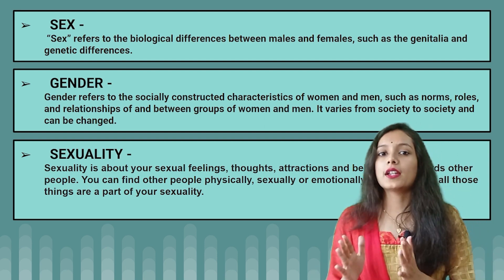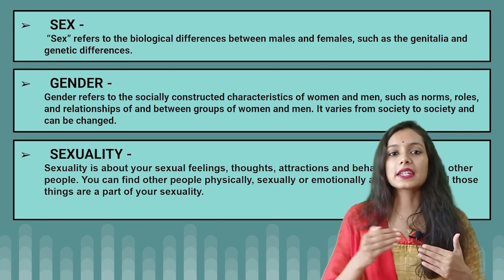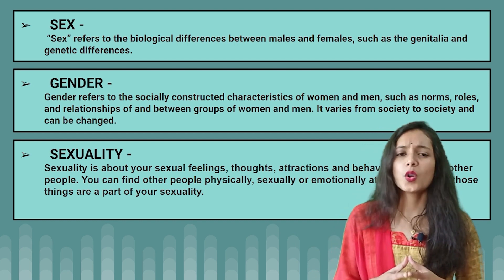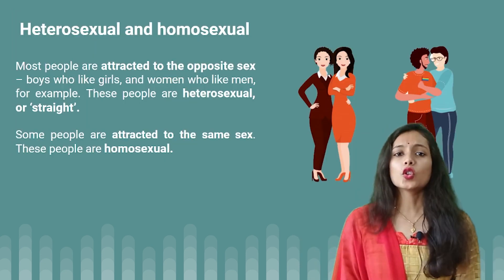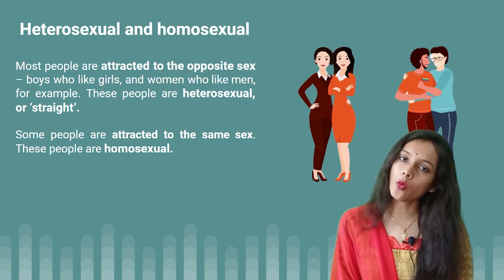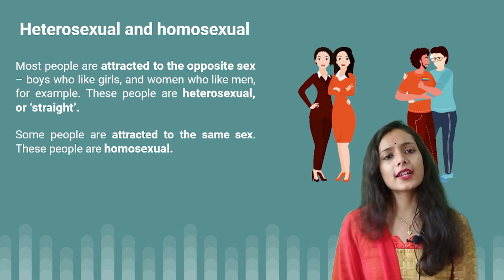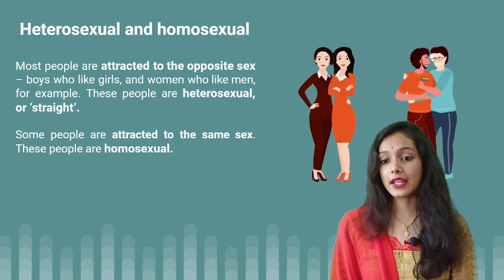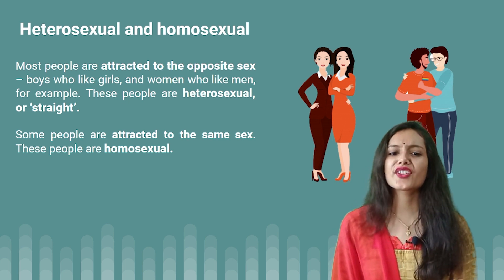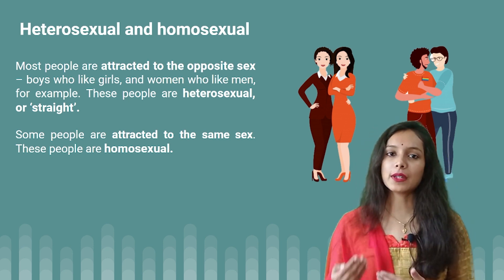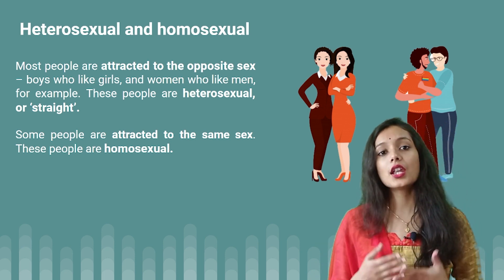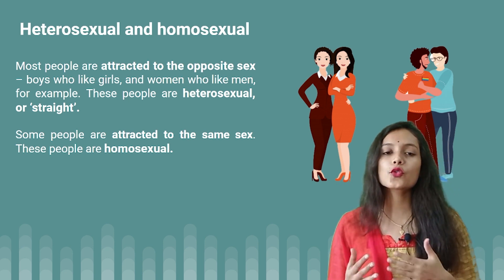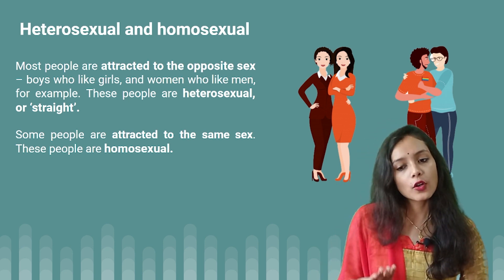It was very important to understand gender, sex, and sexuality, because many people understand these concepts in the wrong way. They don't clearly know the difference between all of them. Heterosexual means people attracted to the opposite sex — boys who like girls and women who like men. Those people are heterosexual or straight. Homosexual means people who are attracted to the same sex.